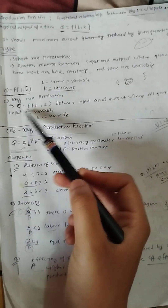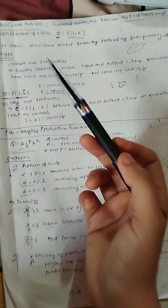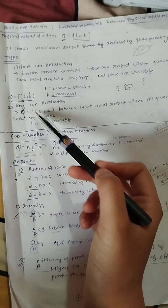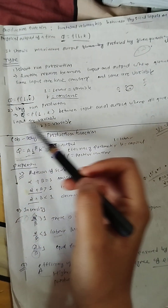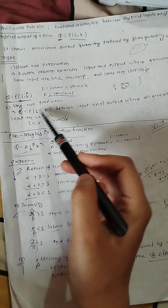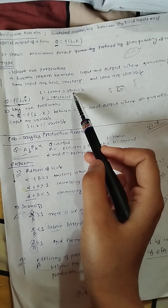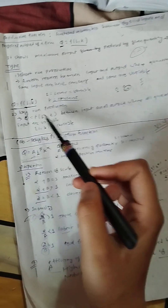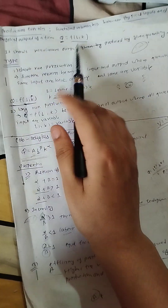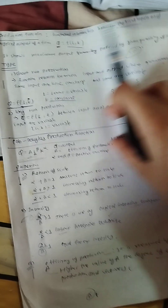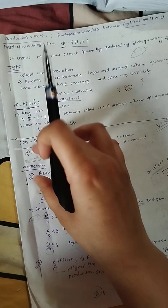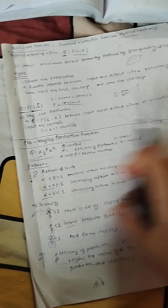Long-run production function is a functional relationship between input and output where the quantity of all inputs are variable. For example, in the short run, labor is variable and capital is constant. We have the definition and the two types - short run and long run.